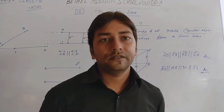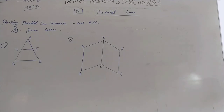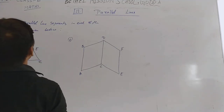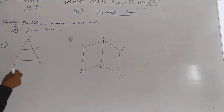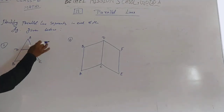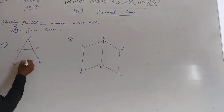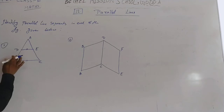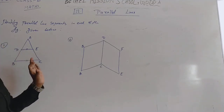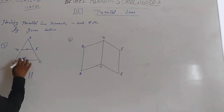Now we solve the next question — question three. It says identify the parallel line segments in each figure. In the first figure, you have to identify which segments are parallel. These two lines cut each other and the distance between them is not the same, so they are not parallel. We can write: BC is parallel to DE.